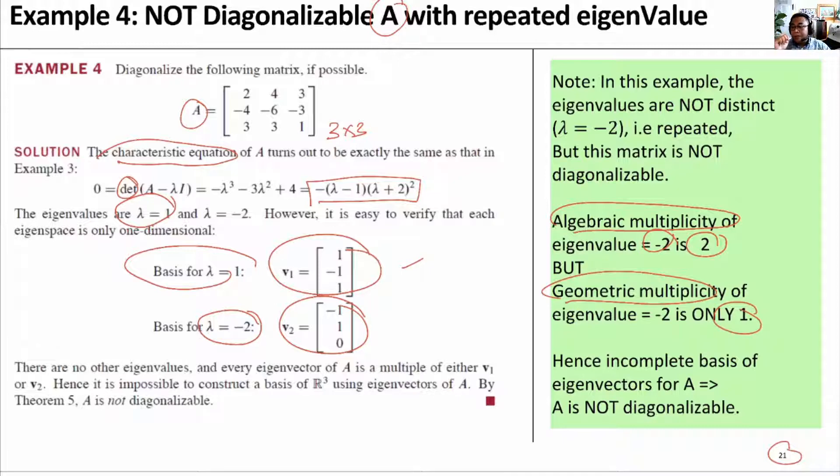Again, what it means is that the geometric multiplicity is less than the algebraic multiplicity for eigenvalue equals minus 2.